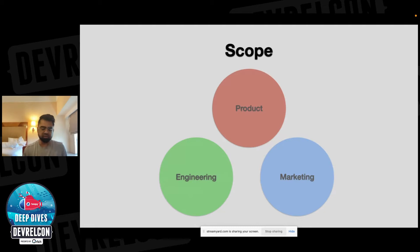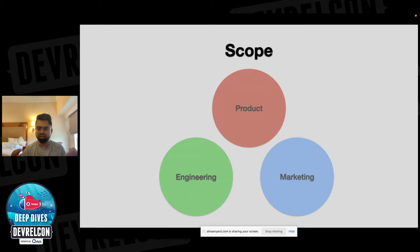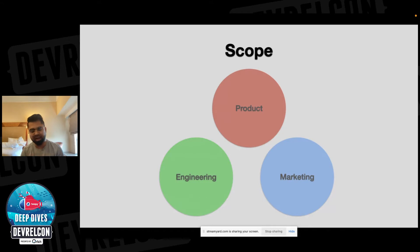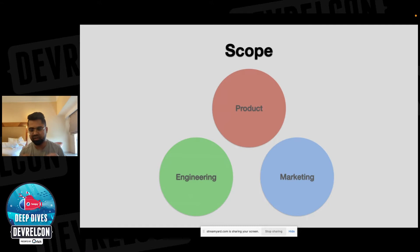To talk about scope: one of the things I've noticed across different companies is that DevRel touches primarily three focus areas — product, engineering, and marketing. Let's take an example product called AVC — something a developer uses to build, ship faster, or reduce testing times. There will be a product team with product managers and product marketing managers, an engineering team with engineering leaders and developers, and a marketing team with marketing managers, social media, and content. DevRel will closely work with one or all three of these verticals.